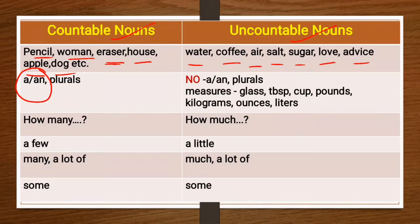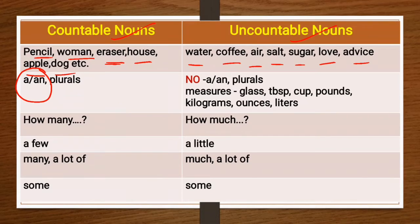If we talk about salt and sugar, we cannot count the small particles or crystals of sugar. And emotions and advice are abstract nouns — they are feelings and ideas, we cannot count them. That is why they are considered uncountable nouns.